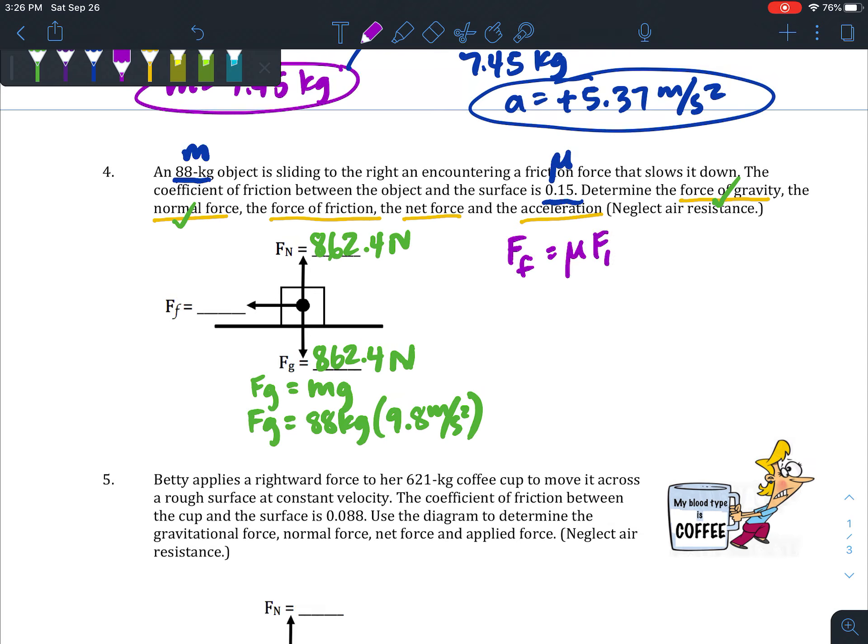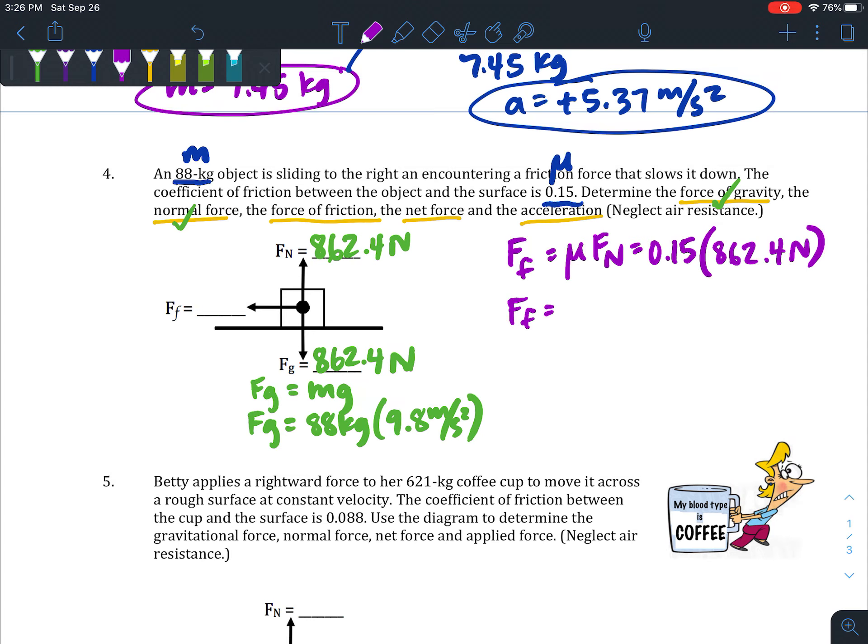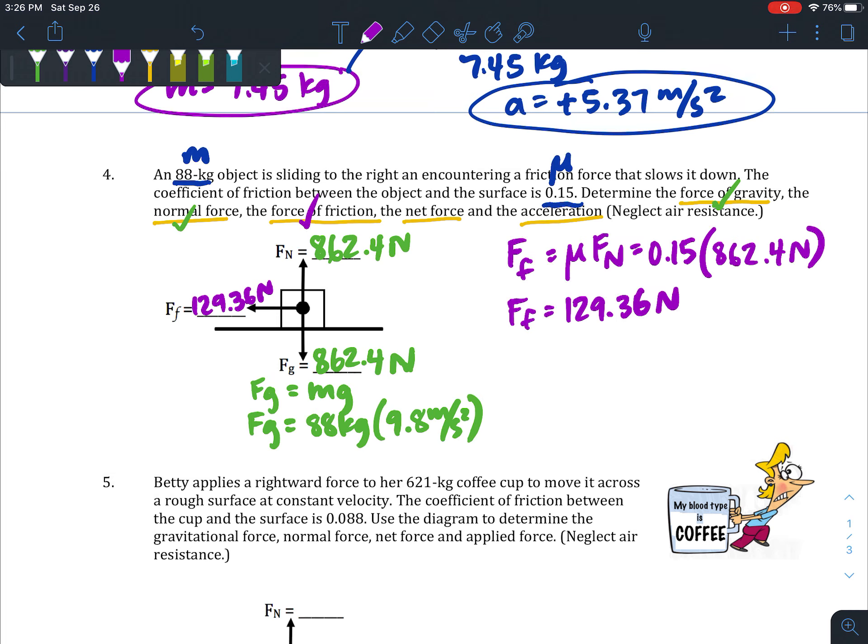Now knowing the normal force, I can use the friction formula: force of friction equals the coefficient of friction times the normal force. They gave me the coefficient in the problem, and I just calculated the normal force (862.4 newtons), so I can multiply those and get a force of friction equal to 129.36 newtons. I've filled in my whole diagram. Next thing I want to do is answer the net force. When you're looking at this picture, we see that normal and gravity are balanced—they sort of cancel each other out—but friction is unbalanced. So friction is the net force in this case; it is the unbalanced force that's slowing it down.